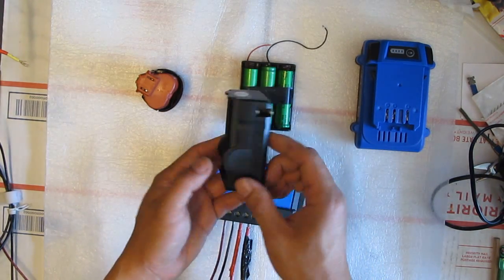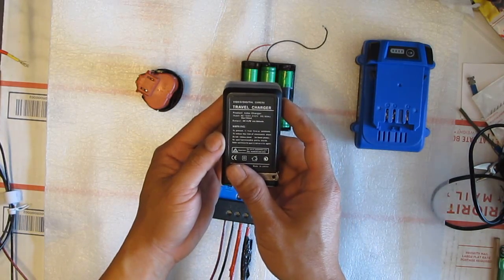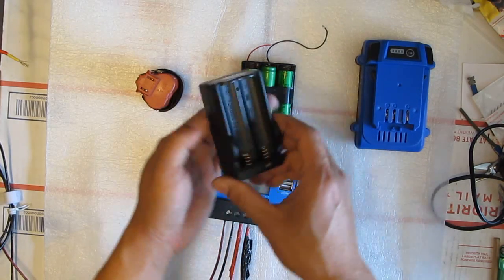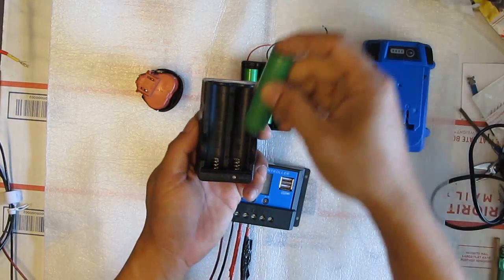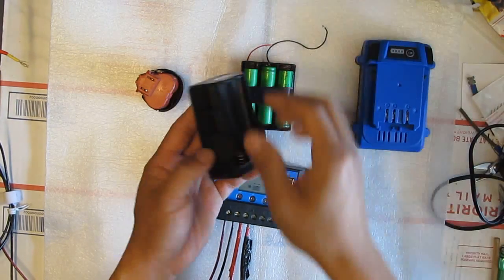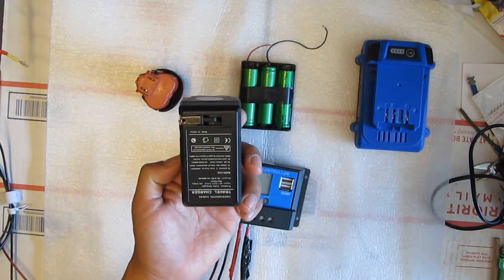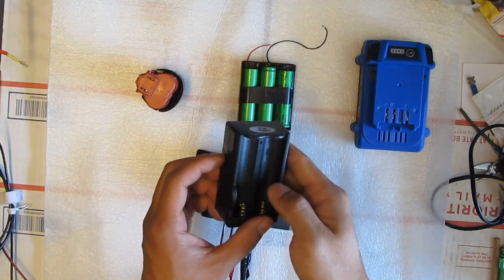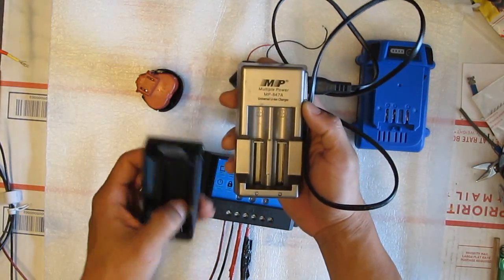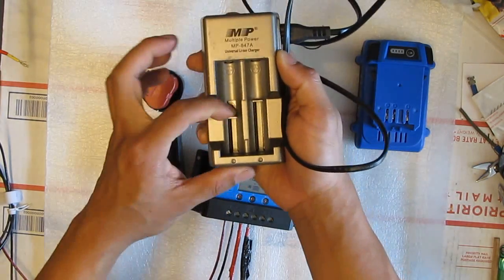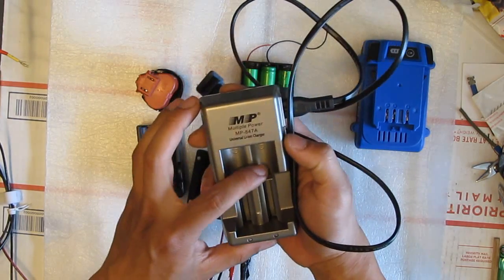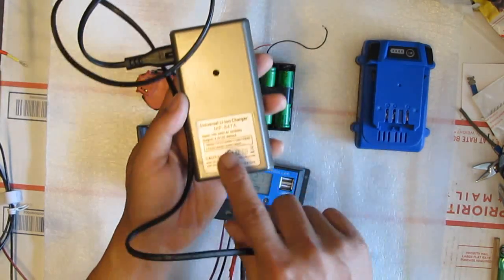This one here, this is the 18650 charger and it charges at 4.2 volts, 600 milliamps. It charges single cell 18650 cells like this. And this charger here, a lot of us use this and it's all over the market, all over the internet. This one here and also this one here. This one's just the same except that it's this here. You can adjust it so you can adjust different cells but it's a lithium ion battery charger and it also just at 4.2 volts.